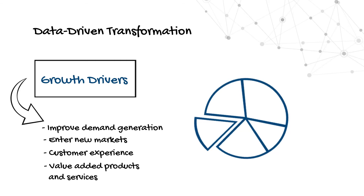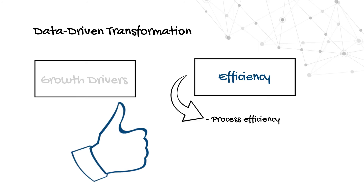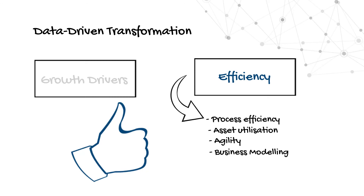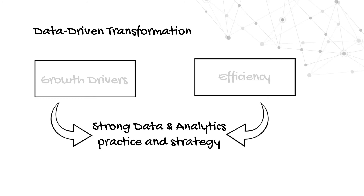The second aspect is efficiency. How do I drive process efficiency? How do I improve the utilisation of the assets that I've deployed? How do I increase the overall agility of the organisation and respond to changing markets? COVID has taught us that agility is crucial for success. And how do I change my business model? All of these require strong data and analytics practice and strategy sitting underneath it.